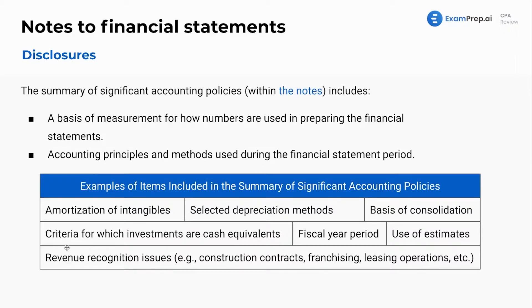For example, in year one we considered gold to be a cash equivalent, but in year two we started selling gold bars so it has to be considered inventory. Both are valid treatments, but you need to tell investors and creditors what you're doing. How are you amortizing intangible assets such as goodwill? Which depreciation methods are you using? Maybe you went from using a calendar year to now a June 30 year end. How did you consolidate? Did you have equity method investments? You need to talk about that.